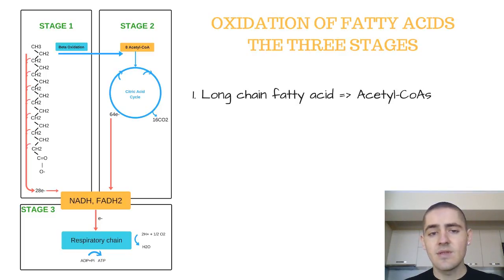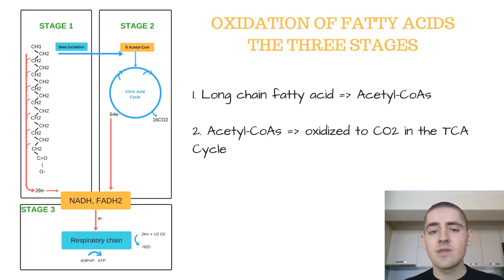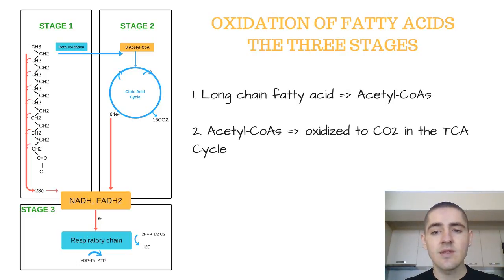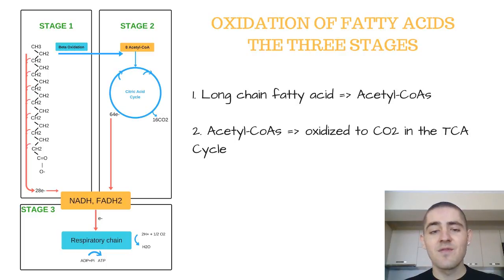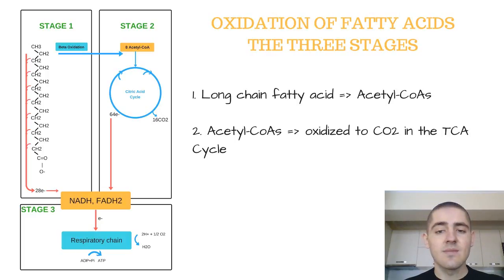In stage 2, these acetyl-CoAs are oxidized to carbon dioxide in the Krebs cycle, or citric acid cycle, or TCA cycle — whatever of the three forms you prefer. This step also occurs in the matrix of the mitochondria.